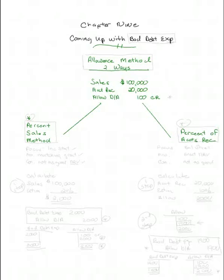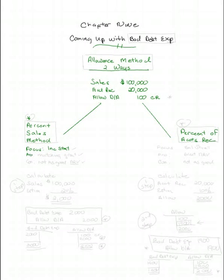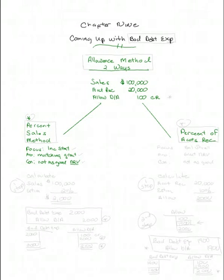Under the Percent of Sales Method, we have the focus on the income statement. The pro is it's great matching. The con is it's not as good at giving you net realizable value because it doesn't really consider what net realizable value the accounts receivable could be.